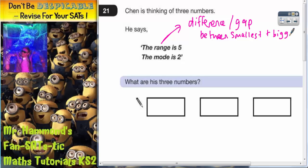So, if we pretend that the smallest number is going to go in the first box, we're just going to write them in the order of size, and the biggest number is here, we need that gap to be a gap of five, because the range is five.